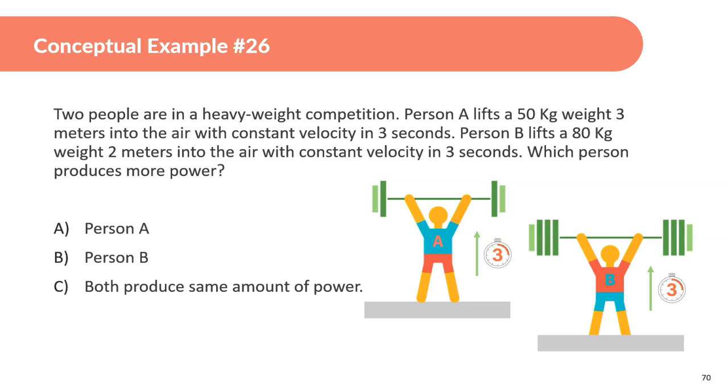Two people are in a heavyweight competition. Person A lifts a 50 kilogram weight 3 meters into the air with constant velocity in 3 seconds. Person B lifts an 80 kilogram weight 2 meters into the air with constant velocity in 3 seconds. Which person produces more power? Now we have to figure this out. Let's find what the work done of each person is. This one's going to be 50 times 10, so 500. That's the force applied, and it moves it up 3 meters. So, this is going to be 1,500 joules of work. Person B lifts 80 kilograms, so that's 80 times 10, 800. That's the force applied, and 2 meters. So, this is going to be 1,600 joules. They both take 3 seconds, so if we divide this by 3 and divide by this by 3, person B produces more power again.